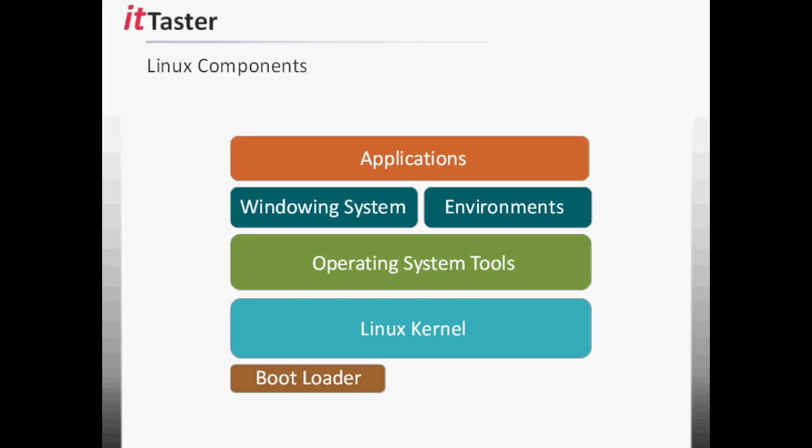So to recap, the typical components of a Linux operating system are: a bootloader, which is responsible for loading the Linux kernel; the Linux kernel, the core of the operating system; operating system tools, enabling us to interact with and operate the computer; a windowing system that supports a GUI, enabling us to run desktop environments; and software applications.